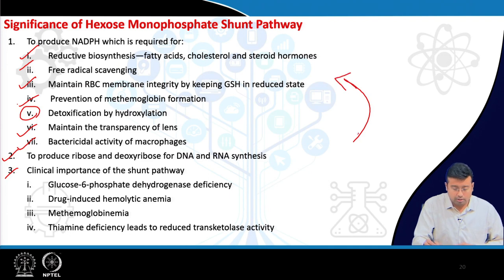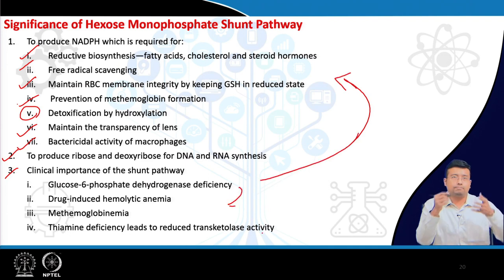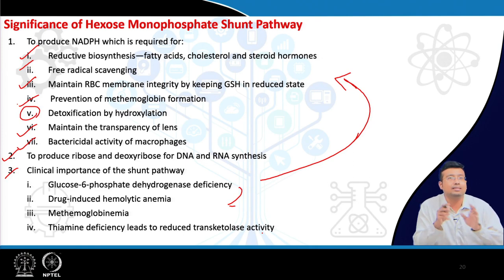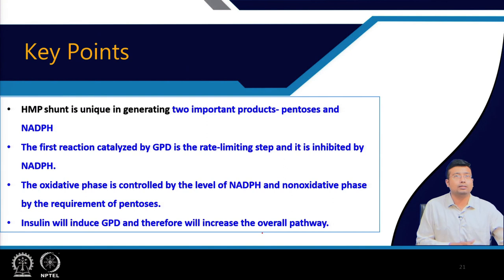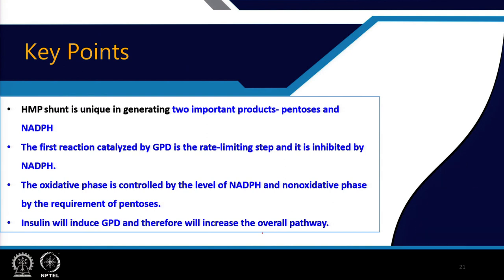Clinically, G6PD deficiency leads to drug-induced hemolytic anemia and methemoglobinemia. Thiamine deficiency leads to reduced transketolase activity. Key points: NADPH and pentoses are produced from HMP shunt; glucose-6-phosphate dehydrogenase is the rate-limiting step, inhibited by NADPH as an allosteric inhibitor; the oxidative phase is controlled by NADPH levels; the non-oxidative phase is controlled by pentose requirement; insulin induces G6PD and increases overall pathway activity.